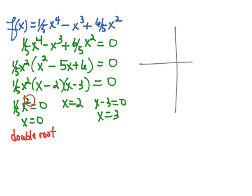So if we go to sketch our graph, we know that we have a double root at zero, we have a single root at two, and a single root at three.